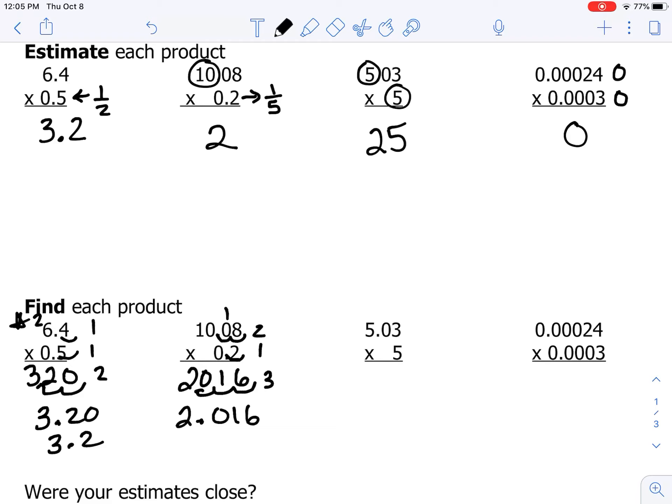All right, on to the next question. 5 times 3 is 15, 5 times 0 is 0 plus 1 is 1, and 5 times 5 is 25. We have two decimal place values in that top number, none in the second number. So we need 2 in the product. And when we bump it over, that's 25.15.